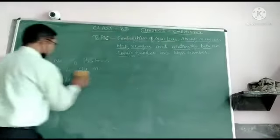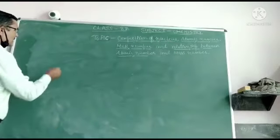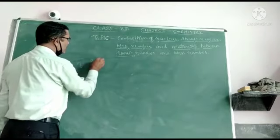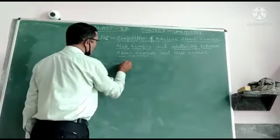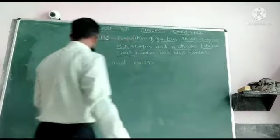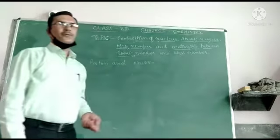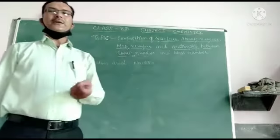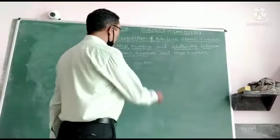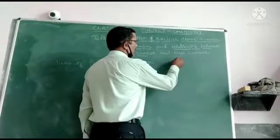Now, mass number. Mass number may be defined as the sum of protons and neutrons present in the nucleus of an atom. Mass number is represented by the English letter A.